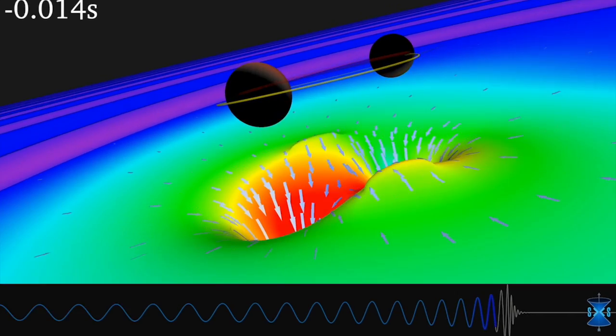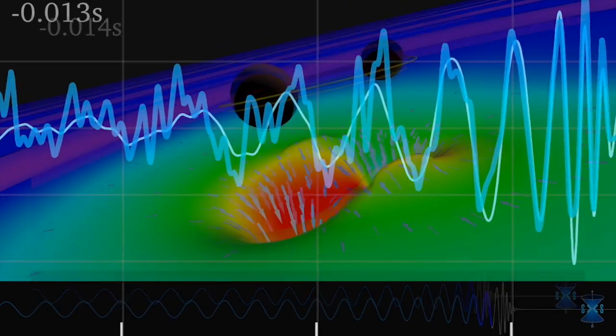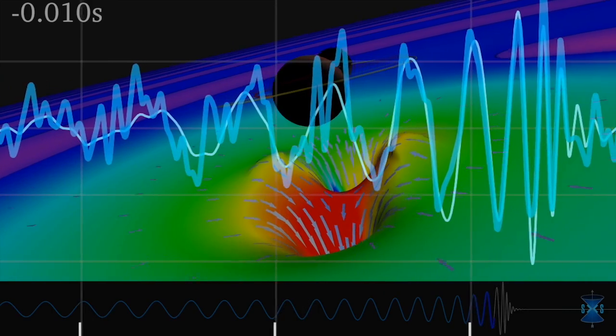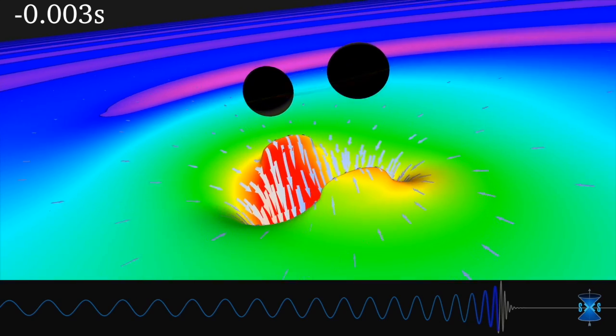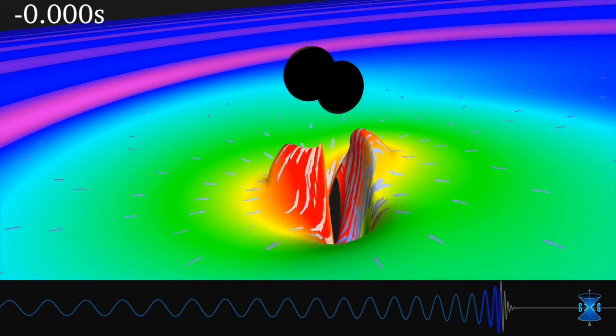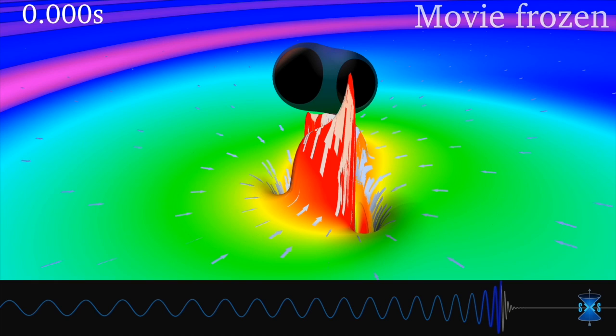The bottom portion of the simulation shows the waveform, or wave shape, of the emitted gravitational waves. The gravitational waves carry away energy, causing the black holes to spiral inward and collide.